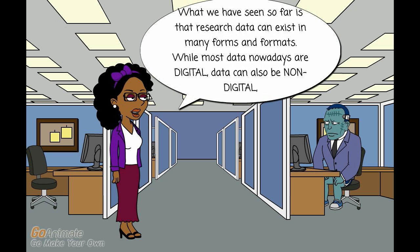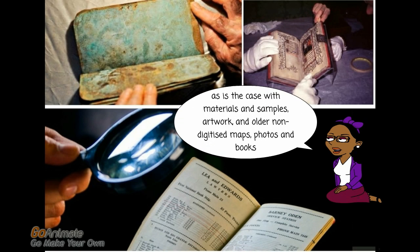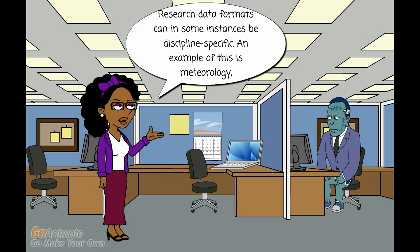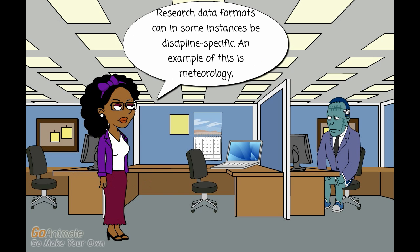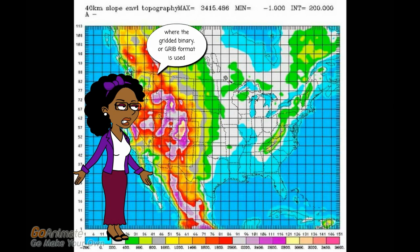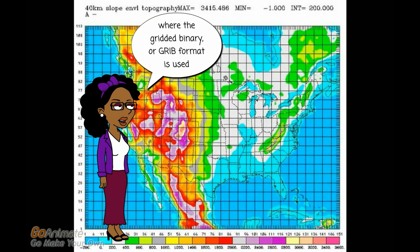What we have seen so far is that research data can exist in many forms and formats. While most data nowadays are digital, data can also be non-digital, as is the case with materials and samples, artwork, and older non-digitized maps, photos and books. Research data formats can in some instances be discipline specific. An example of this is meteorology, where the GRIB — grid binary — format is used.